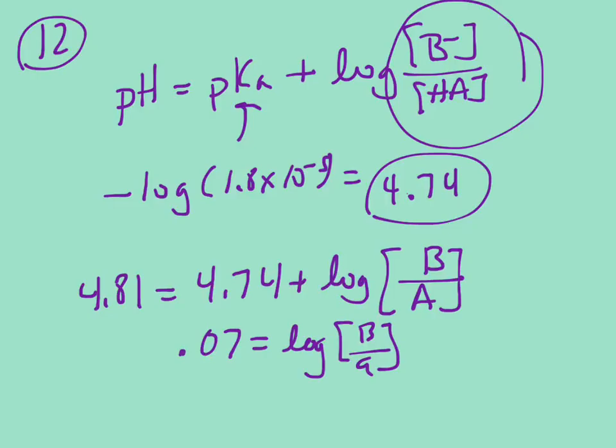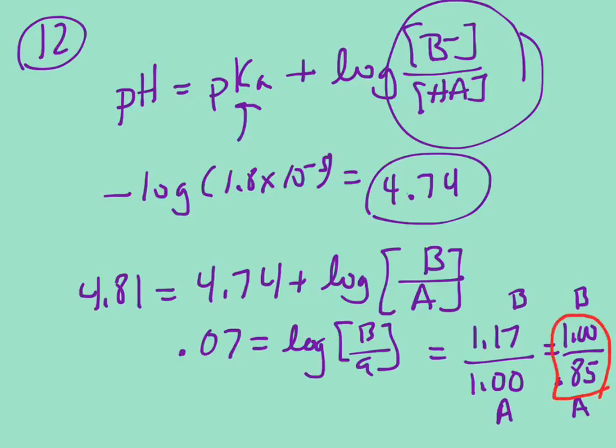So I'm going to plug that in, and I'm going to do inverse log on my calculator. And I'm going to get basically that the relationship is for every 1.17 of the base, I need 1.00 of the acid. Another way you can look at that is for every 1.00 of those, we're going to get 0.85 of those. So for every 1.17 of the base, you're going to need one of the acid. Or for every one of the base, you need 0.85 of the acid. Either way, the math's the same.